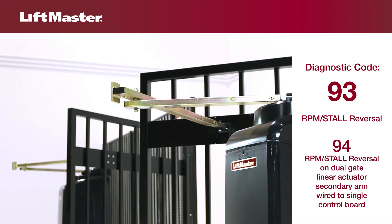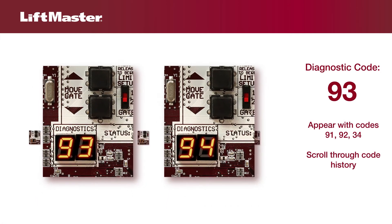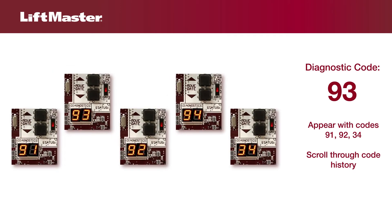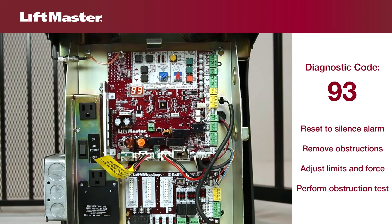The gate will stop and reverse about a foot. Codes 93 and 94 can also appear with codes 91, 92, and 34, so it is important to scroll through the diagnostic code history for a full understanding of possible causes and remedies. If upon reversing the gate encounters a second obstacle, this is a double entrapment. The same code will occur accompanied by an alarm that will sound for five minutes.